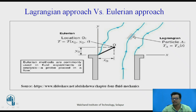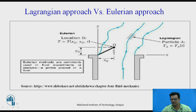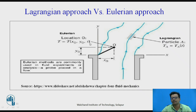Therefore, the temperature we measure is of that single particle A alone — T of A — and it depends upon time. Whatever properties we measure in the Lagrangian method are of an individual particle as it moves along with time. Whereas in the Eulerian approach, we fix the thermometer at point O and measure the temperature as different smoke particles pass through that point. The temperature is a function of location x₀, y₀, and time, but this temperature belongs to different particles. That is all about the Lagrangian and Eulerian approach.